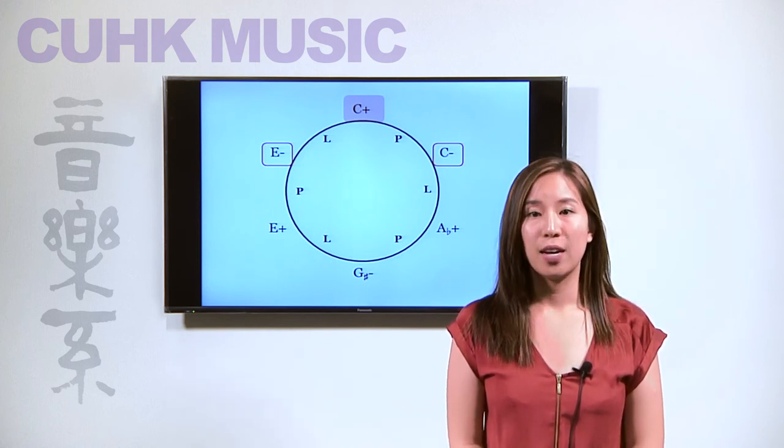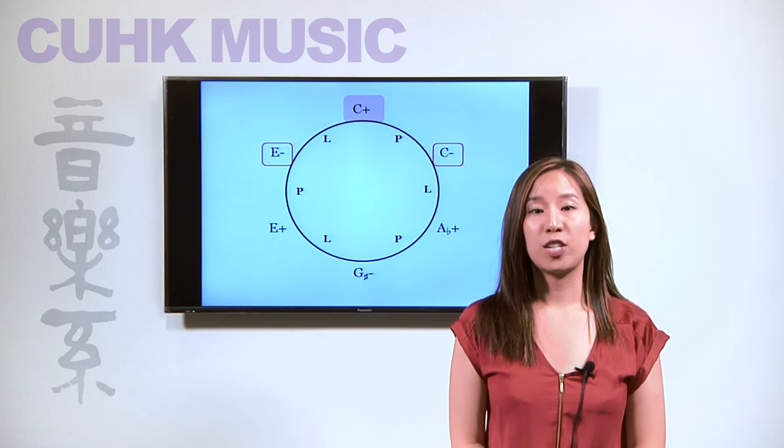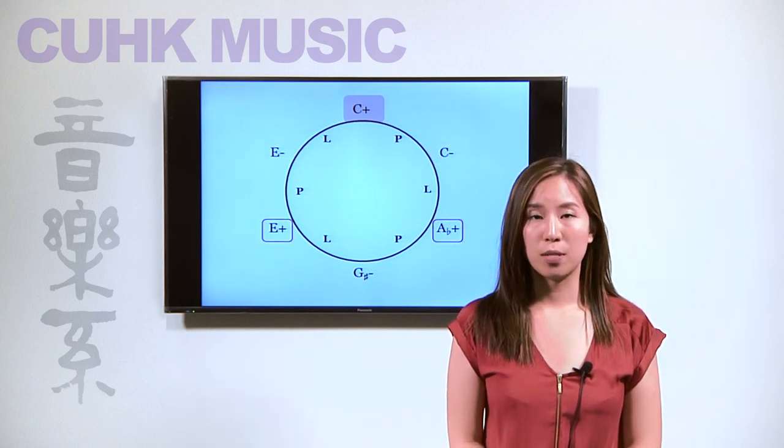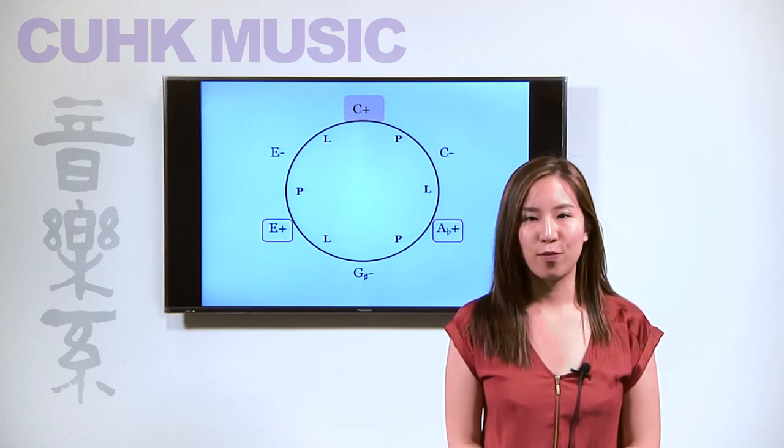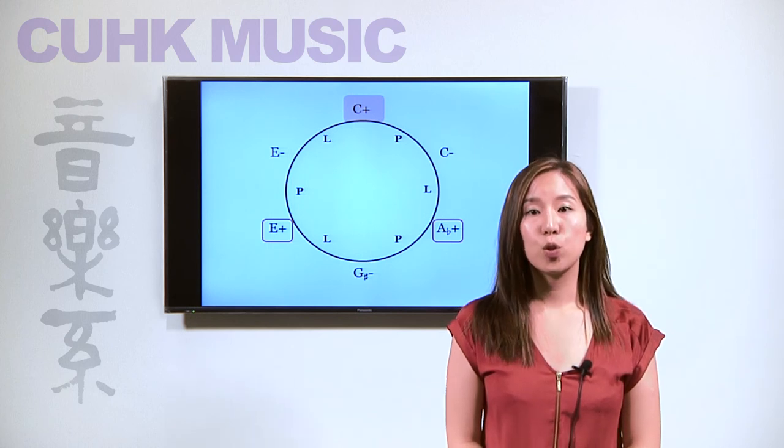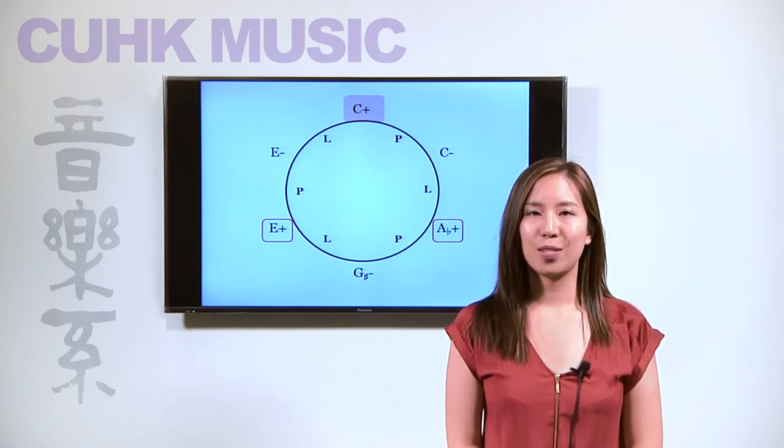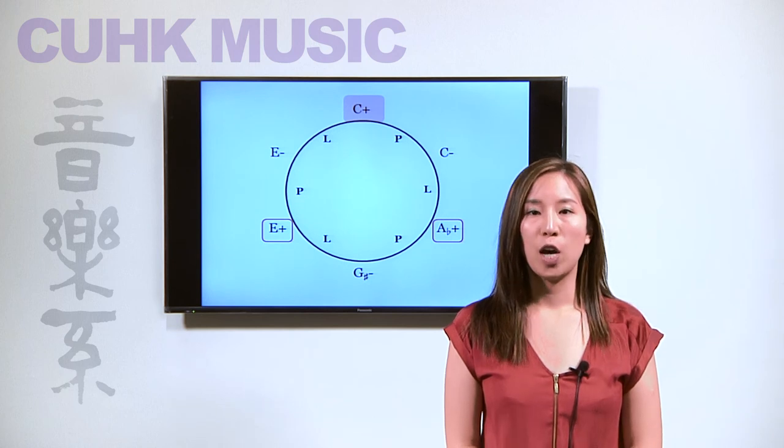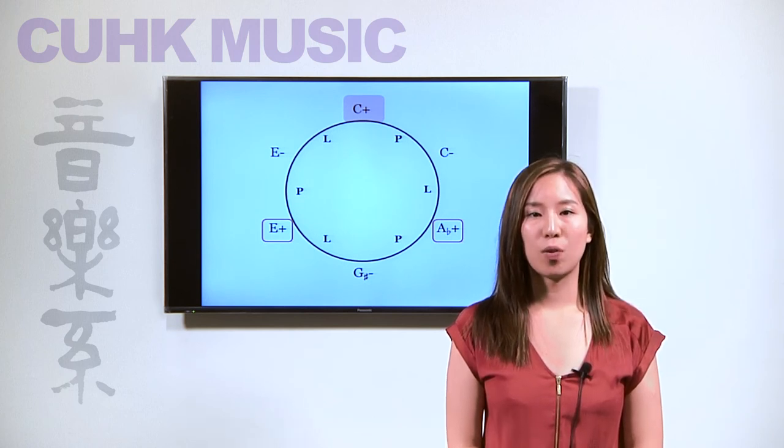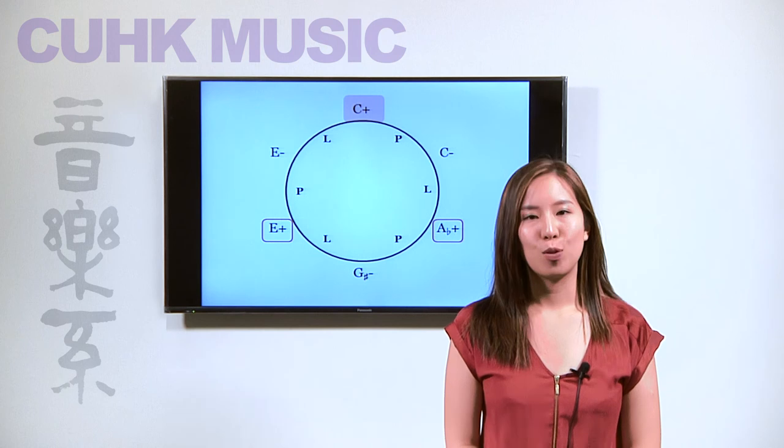Next, the triads that come next to the adjacent ones, in other words, the E major and A-flat major triads, have two pitch class displacements, hence one common tone with reference to the C major triad, and they are modally matched.